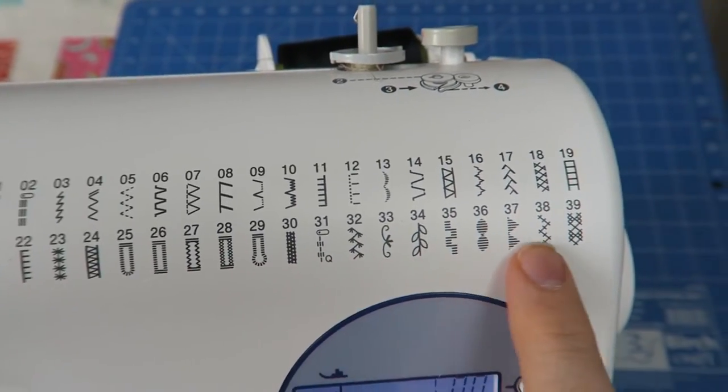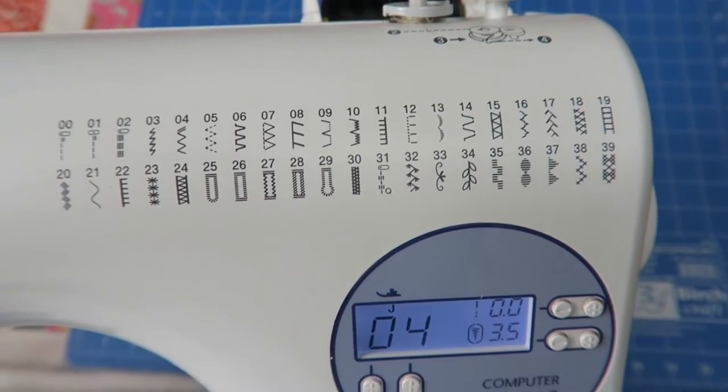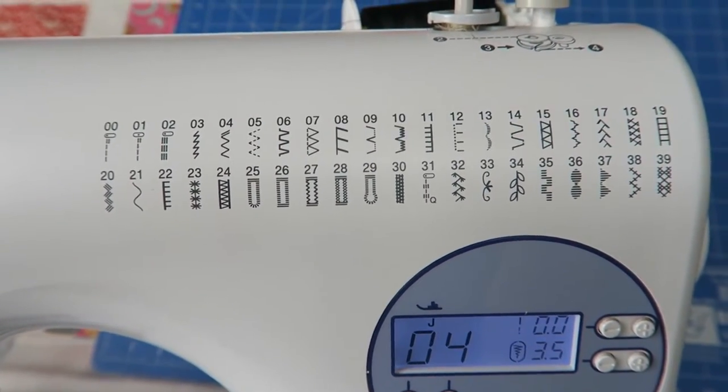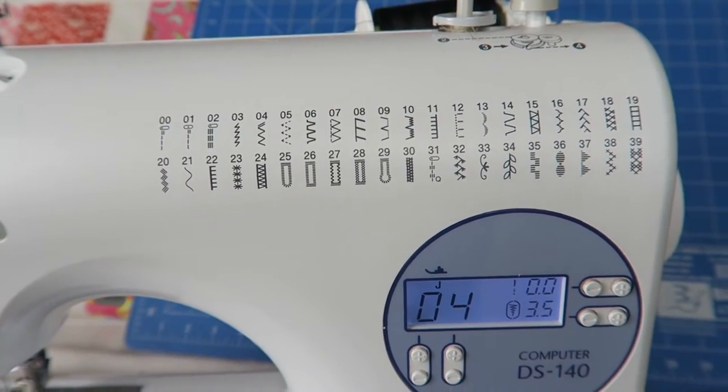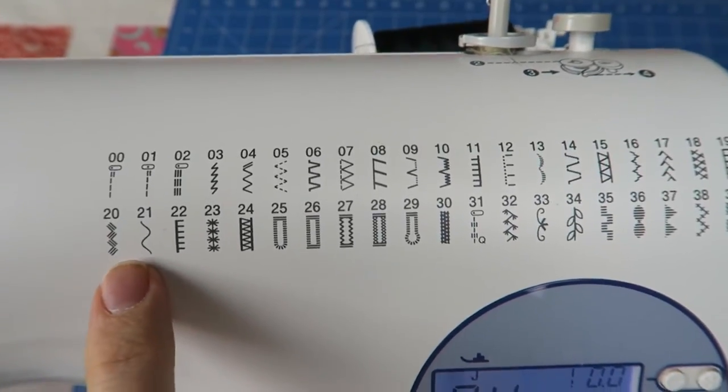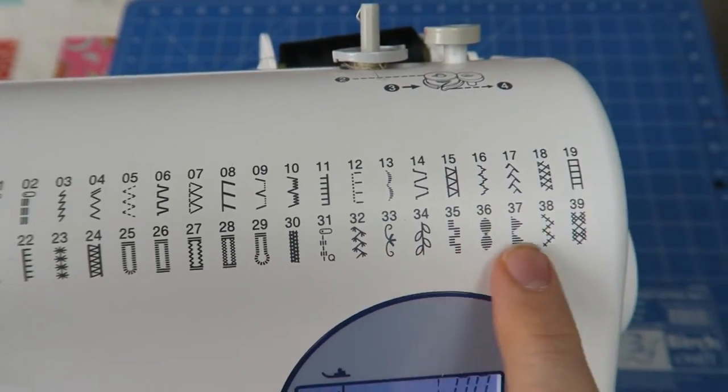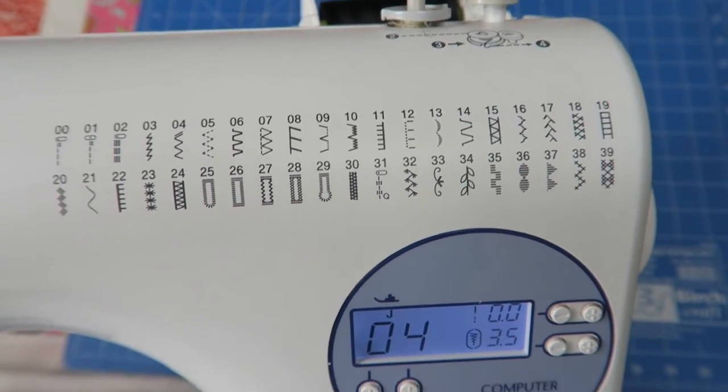I have a lot more different decorative stitches here on my sewing machine, which I hardly ever use or just for decoration purposes. But in this tutorial I wanted to focus on the main stitches: the straight stitch, the zigzag stitches, the overcasting stitches, and the buttonhole stitches. If you want to see any more detailed stitch tutorials, let me know in the comments.